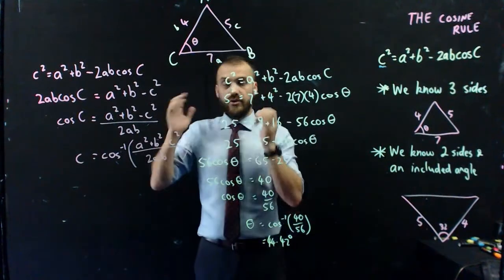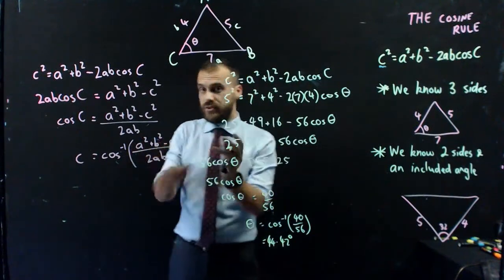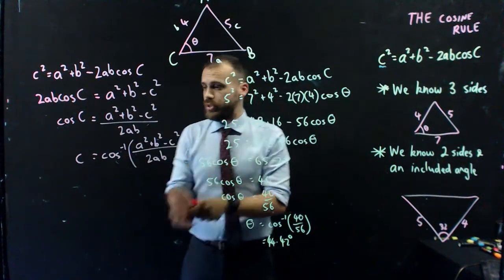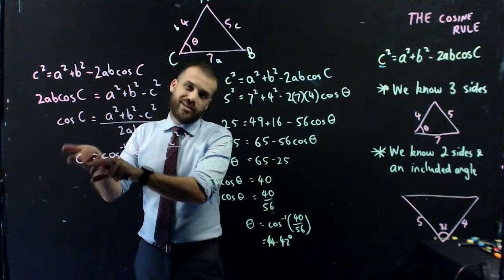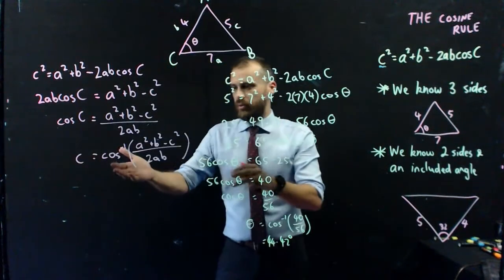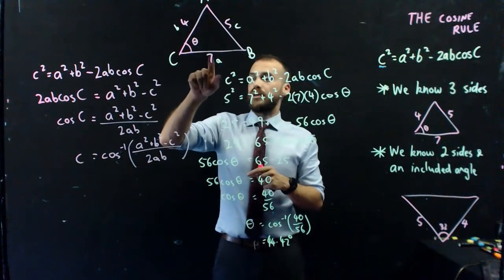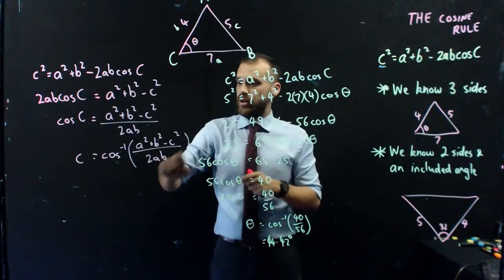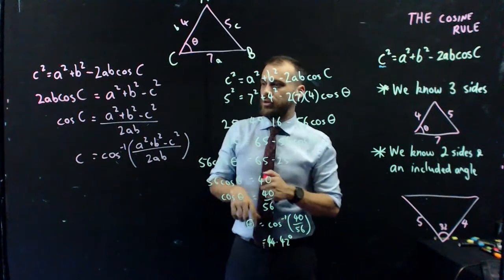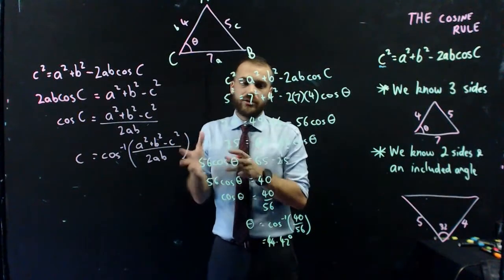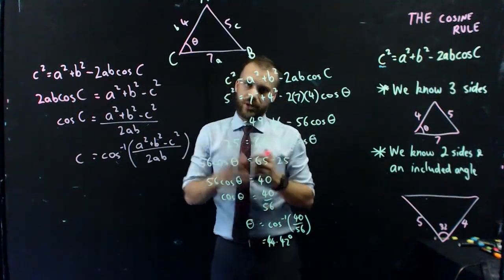Now I have the cosine rule in a different form, a form that tells you the angle or has the angle as the subject, and we've got all of this stuff. And now we can just sub in 7, 4, 5, 7, and 4 and put it into one single formula. Don't do any of this rearranging. We've got an answer.